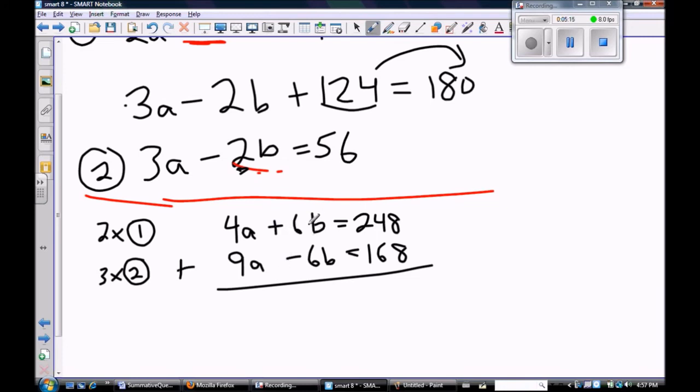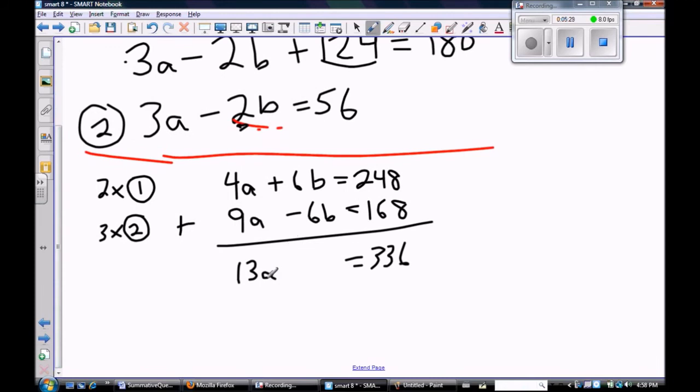Because positive 6 plus negative 6 is 0, and that's what I wanted to do to eliminate. So 4 plus 9 is 13, 248 plus 16 is 336, and now I have one equation with my only variable being a, so if I divide both sides by 13.